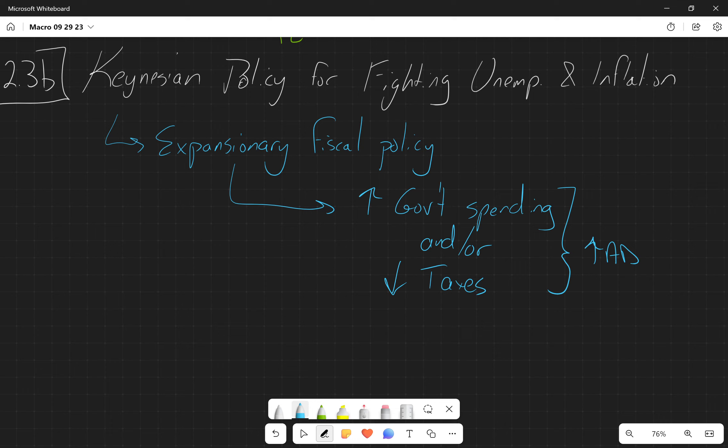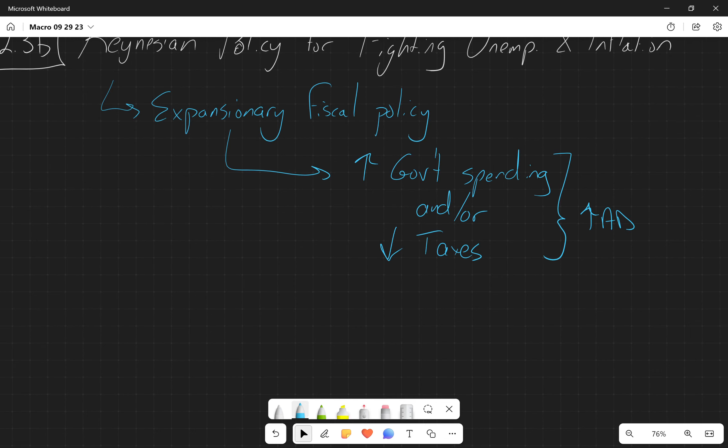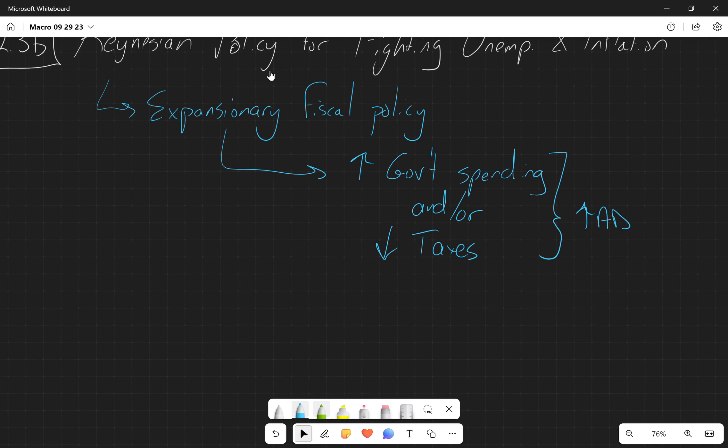And so when the economy is operating above potential GDP, when these expansionary fiscal policies are allowed to take place and actually have an impact, let's say that we overshoot and the economy is above our potential GDP.